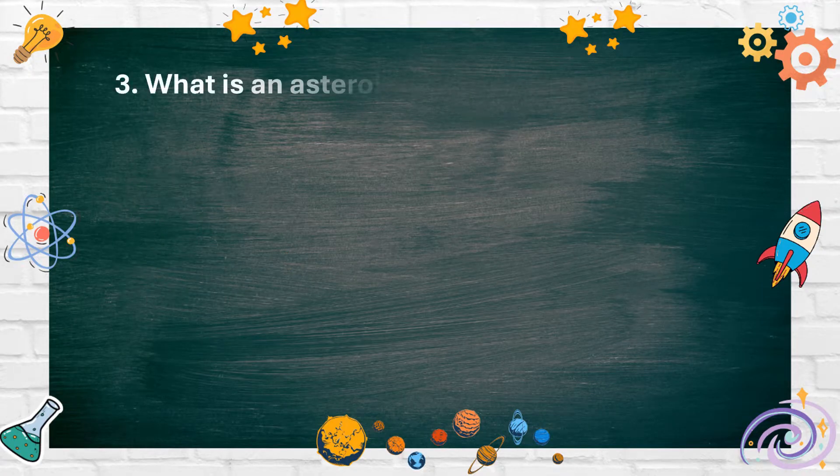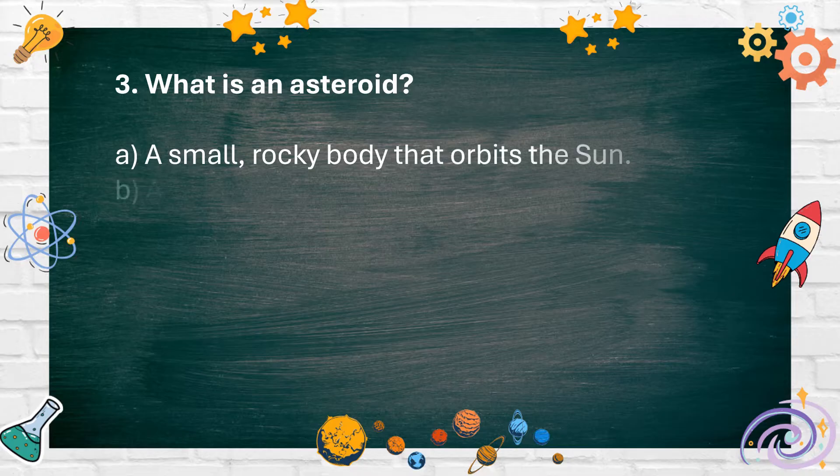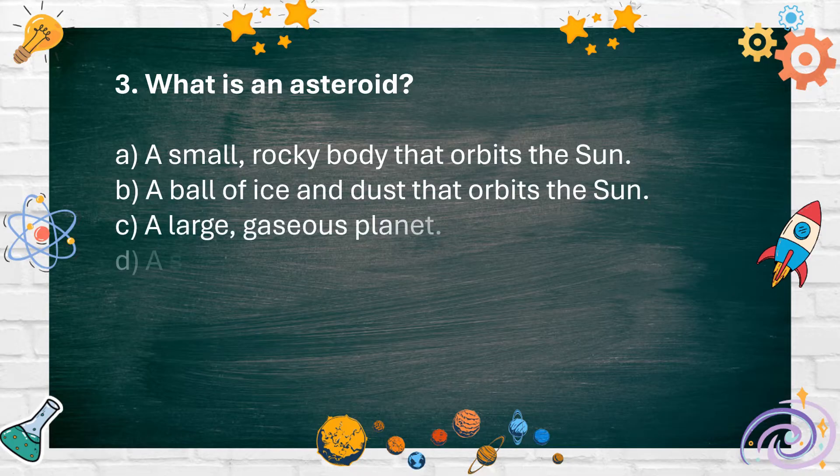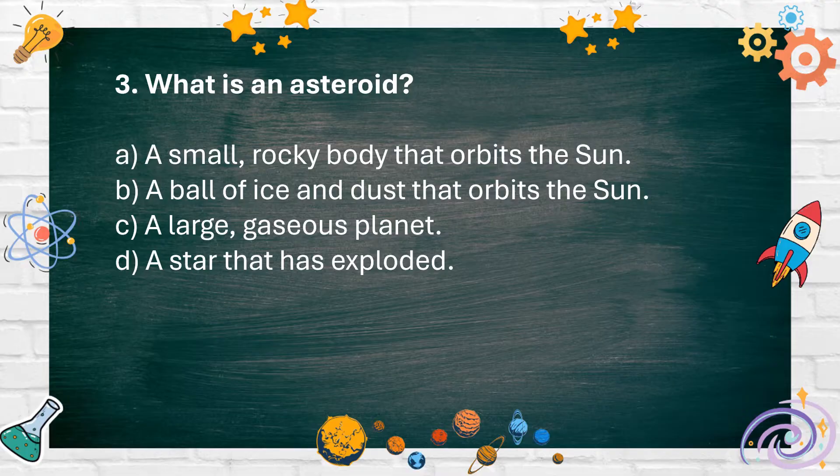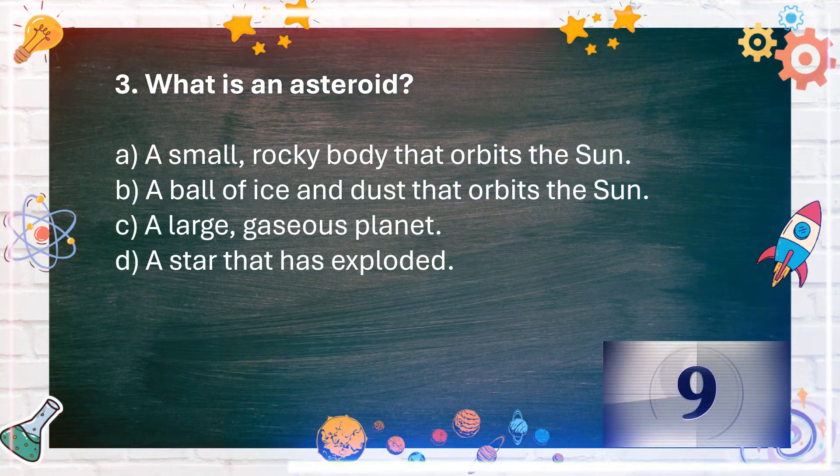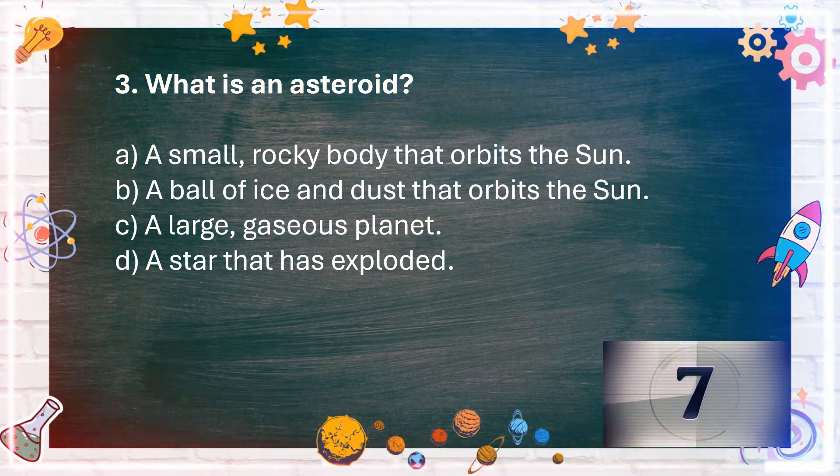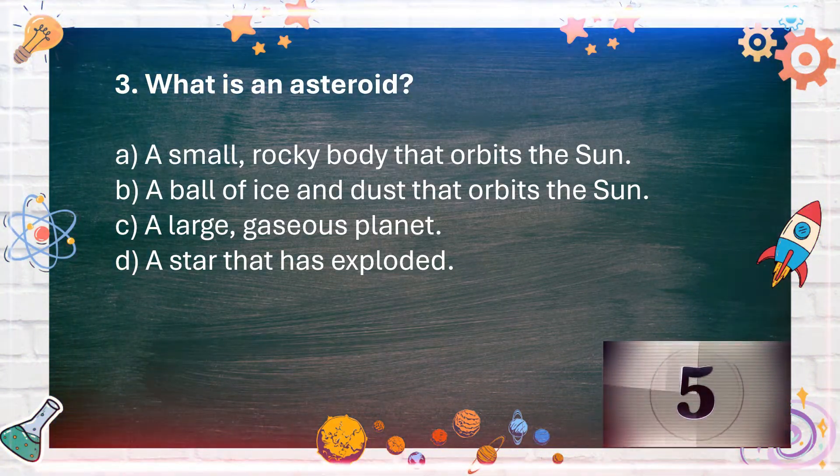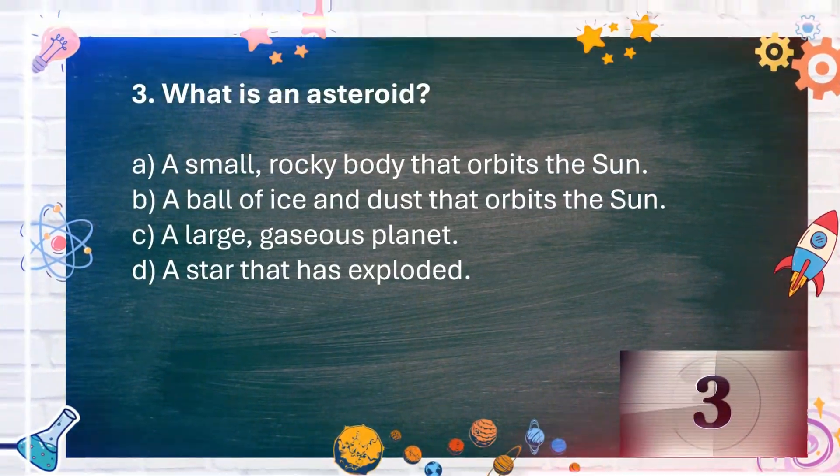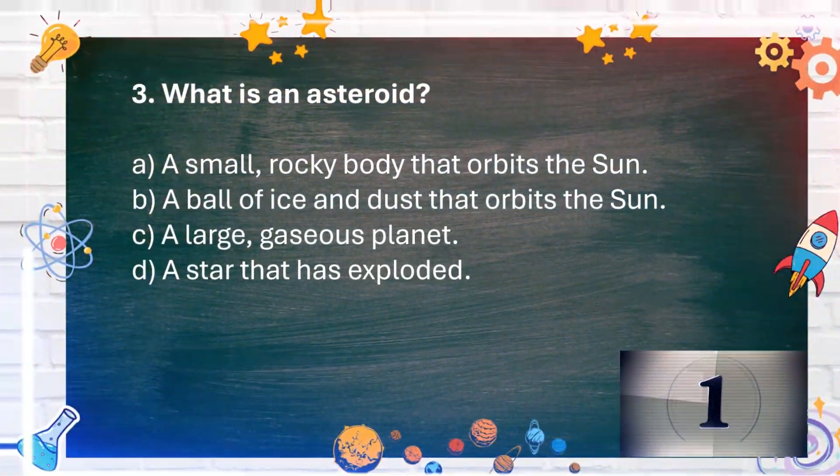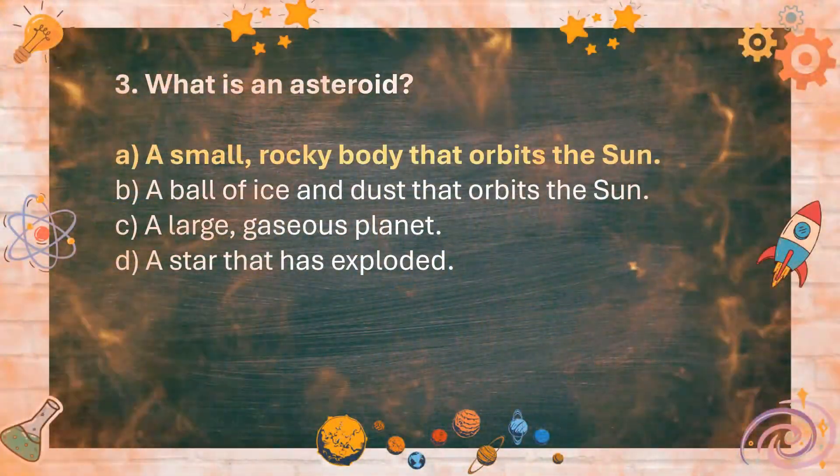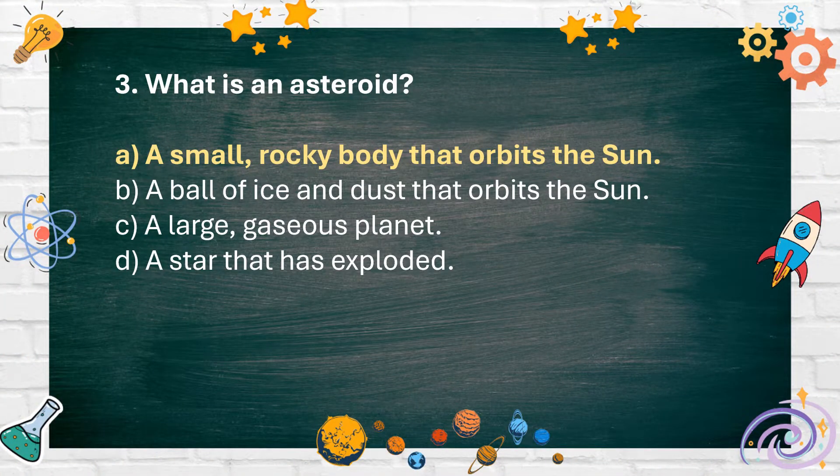Number 3: What is an asteroid? A. A small rocky body that orbits the sun, B. A ball of ice and dust that orbits the sun, C. A large gaseous planet, D. A star that has exploded. The answer is A. A small rocky body that orbits the sun.